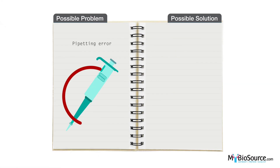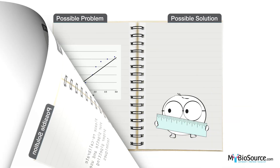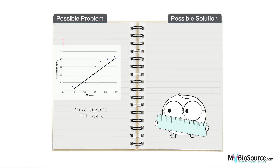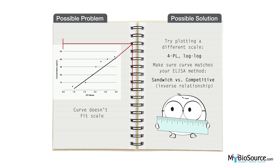There may also be pipetting errors leading to a poor standard curve. Please recalibrate your pipette and use proper pipetting techniques for ELISA assays. In some cases the curve you are using may not fit to scale; therefore you may want to try plotting a different scale that matches your ELISA method, such as a four parameter logistic curve.